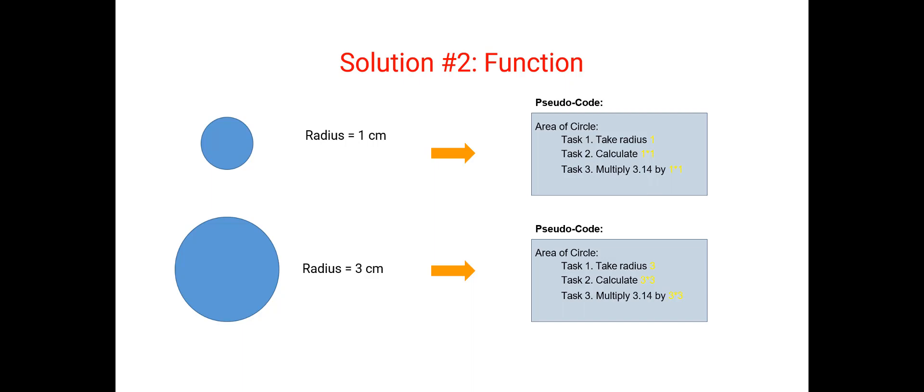So if you take a look at both of these pseudocodes, you will realize that the only thing that's changing in the pseudocode is the value of radius and the calculation you do with radius. In the first example it's 1, so you take 1 squared and then multiply the square by 3.14. And here it's 3, square 3, and then multiply the square by 3.14. Everything else essentially stays the same in the pseudocode.